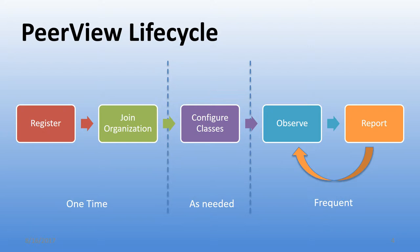After setting up your classes, you move into the use cycle of the Peerview application. You would arrive at someone's classroom, pull open Peerview, select the teacher you're about to observe, select the class, and then be presented with a series of observable items to click on and a few questions to answer before completing your observation.